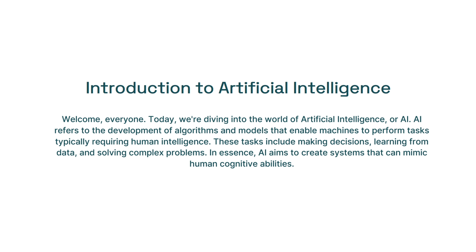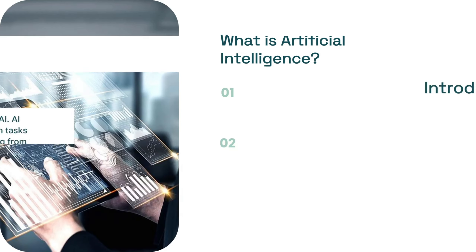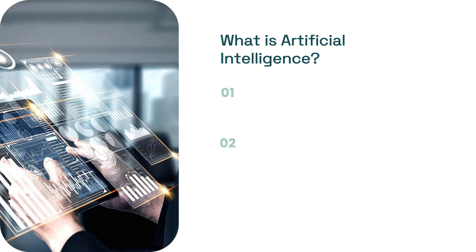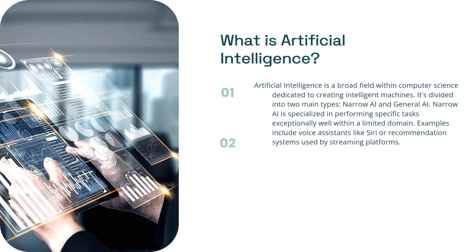In essence, AI aims to create systems that can mimic human cognitive abilities. Artificial Intelligence is a broad field within computer science dedicated to creating intelligent machines. It's divided into two main types: Narrow AI and General AI.